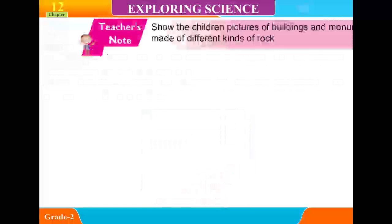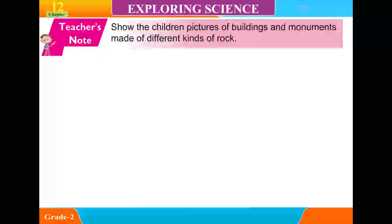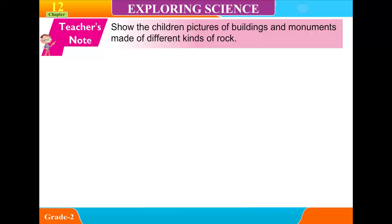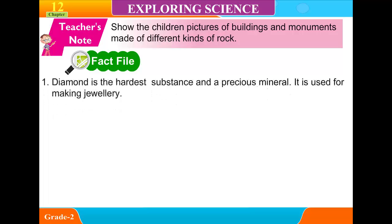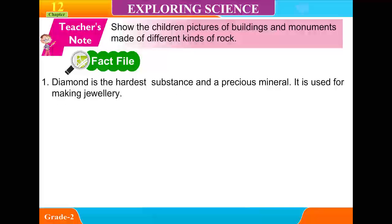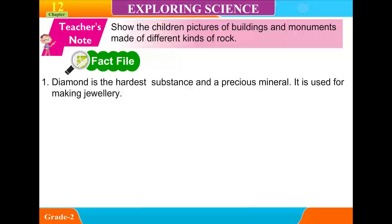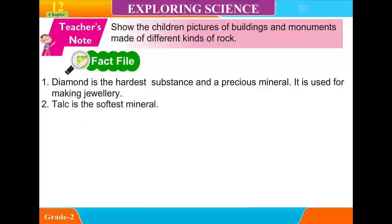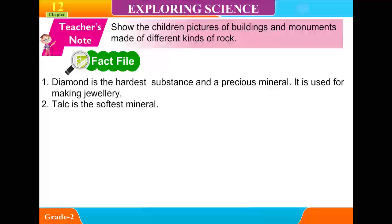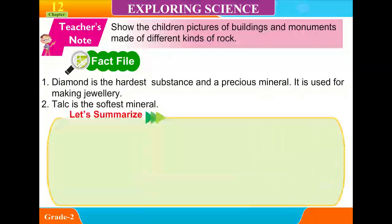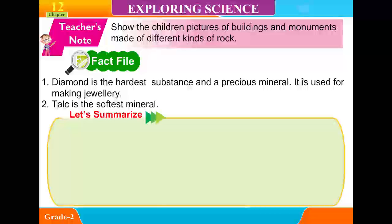Gemstones are costly. Show the children pictures of buildings and monuments made of different kinds of rock. Diamond is the hardest substance and a precious mineral; it is used for making jewelry. Talc is the softest mineral.